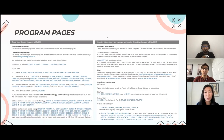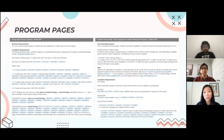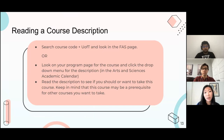The next important thing about choosing a course is reading the course description. If you go back to those slides with the course codes, you can search the course code plus 'U of T' and there's usually a Faculty of Arts and Science page that gives you the course description. You can also go to the program page and click the dropdown menu — it should be on the Arts and Science academic calendar. Reading the description helps you see whether the course has prerequisites you need to take first, or if it's a prerequisite for other courses.